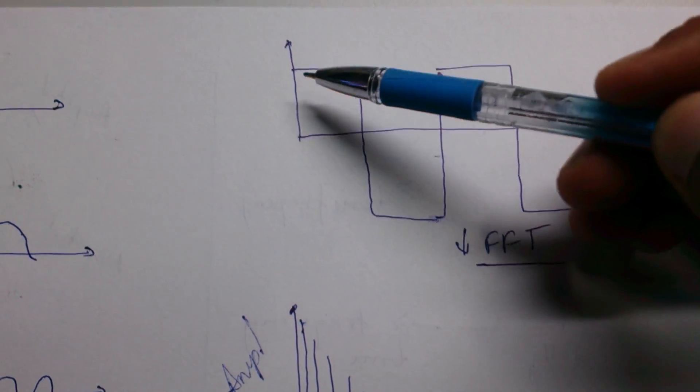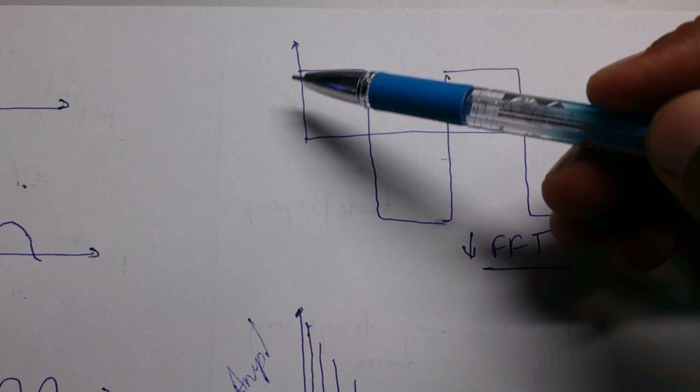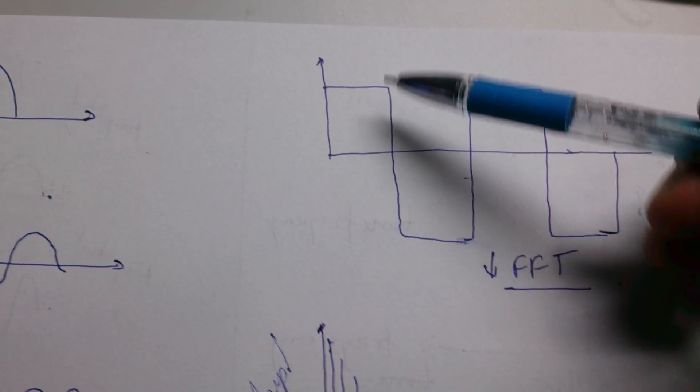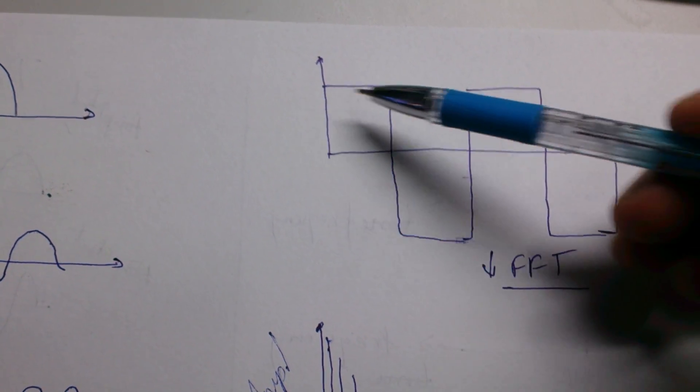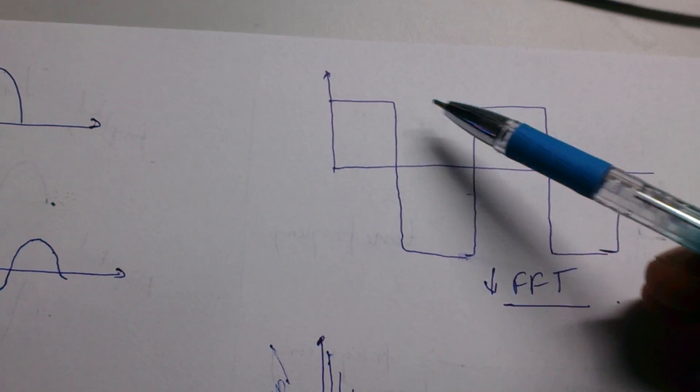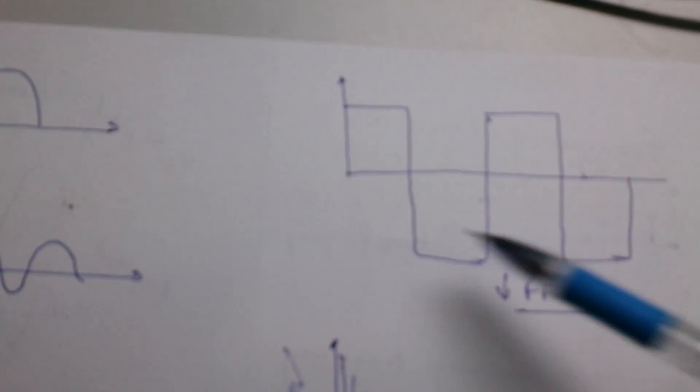At the end you'll be able to see a signal which looks something like this and it has small ripples, but those ripples are very tiny, not that significant to see. So it's a superposition of different sine waves. That's what we get. That's the beauty of Fourier transform.